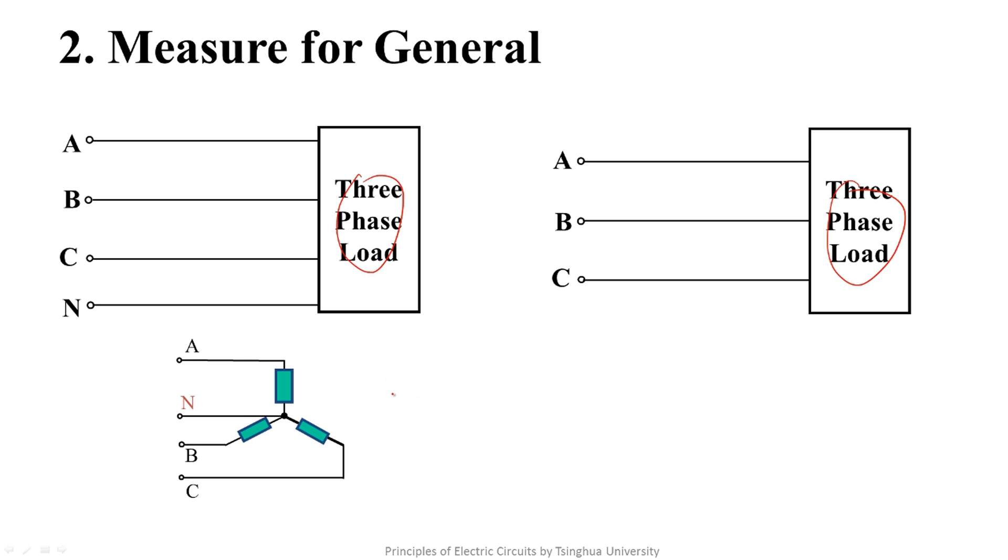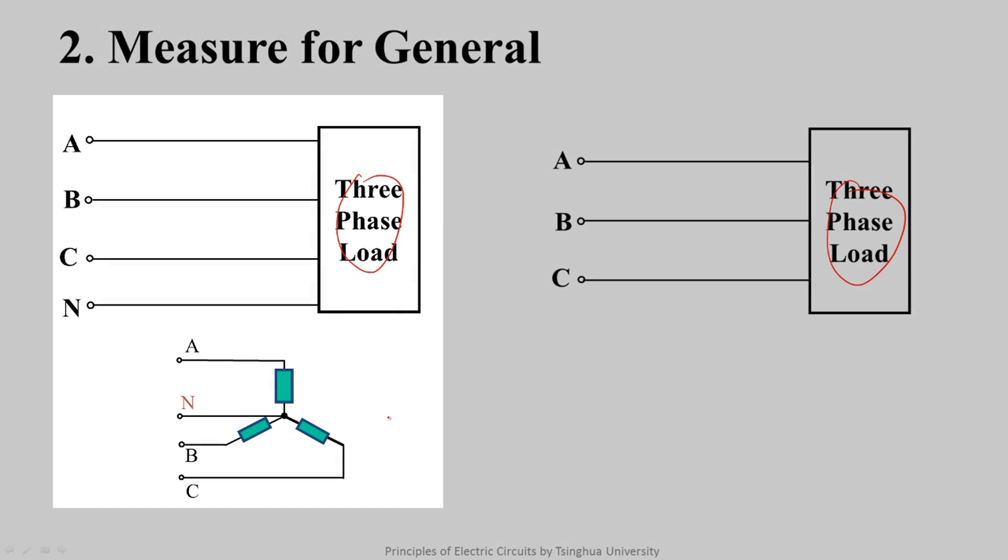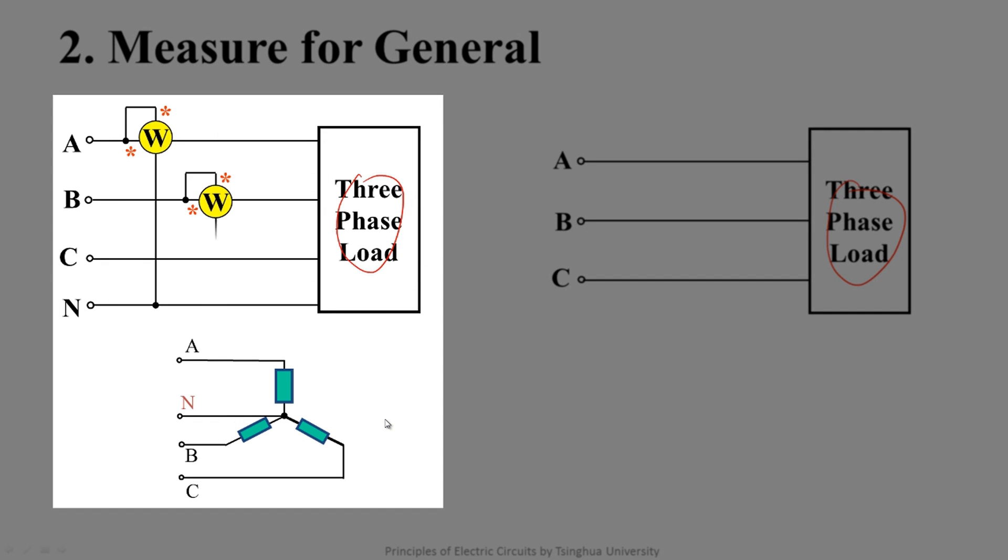According to the knowledge of the power meter in lecture 66, the connection of the measurement for 3-phase 4-line system can be like this. The three power meters measure the active power absorbed by phase A, B and C respectively.